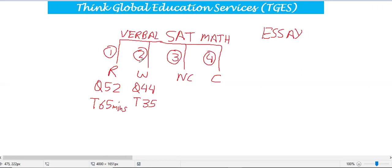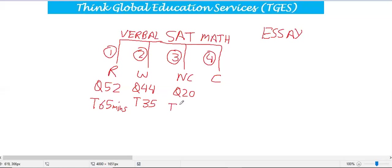In Writing, you have 44 questions and the time is 35 minutes — so there are more questions and less time. Moving to the math sections: the No Calculator section has 20 questions and the time is 25 minutes.